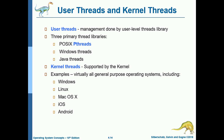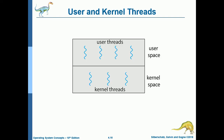Next, user threads and kernel threads. User threads are managed by user-level thread libraries. The three primary thread libraries are POSIX pthreads, Windows threads, and Java threads. Kernel threads are supported by the kernel. Examples include virtually all general-purpose operating systems including Windows, Linux, Mac OS X, iOS, and Android. This illustration shows user space with user threads and kernel space with corresponding kernel threads.